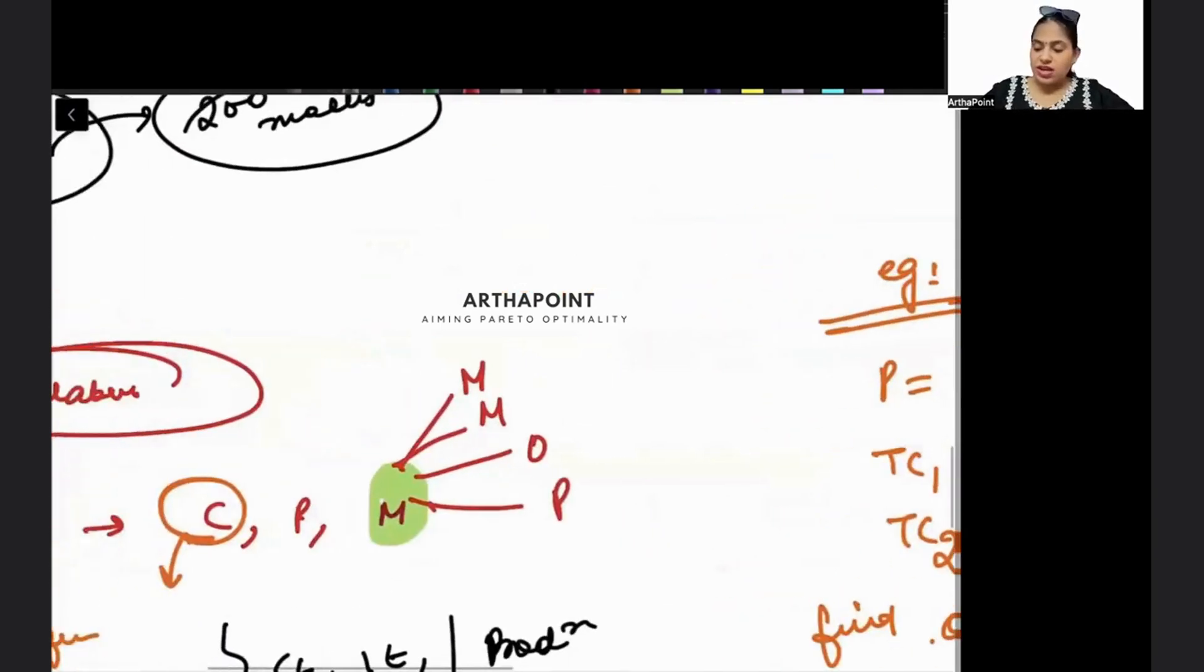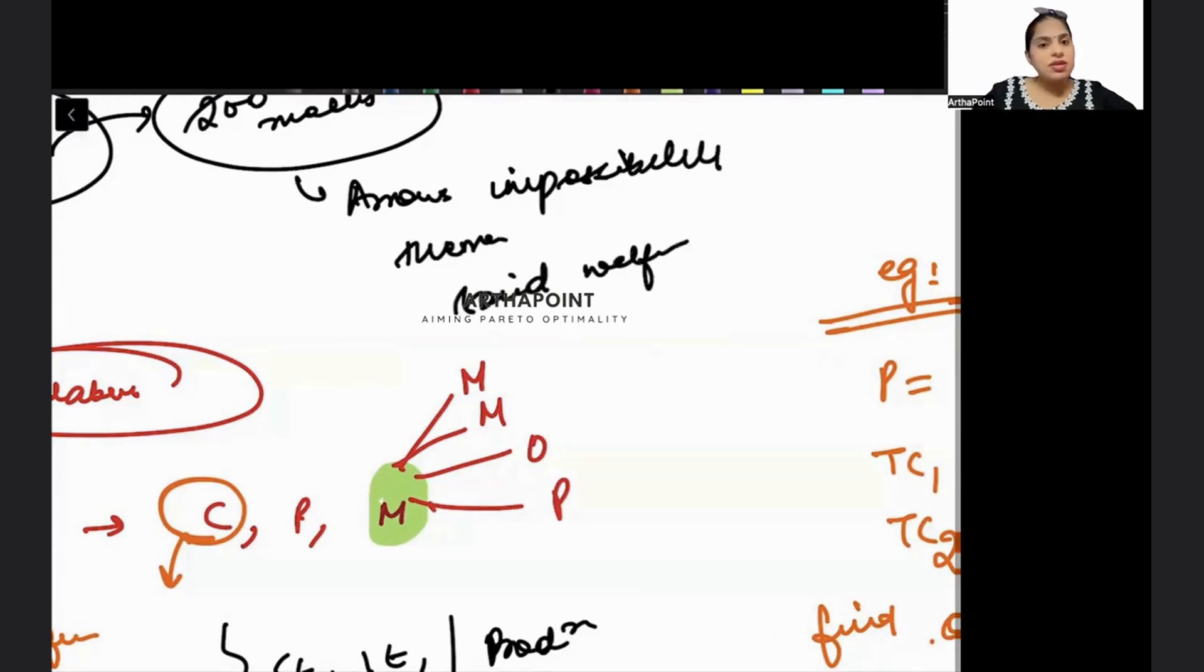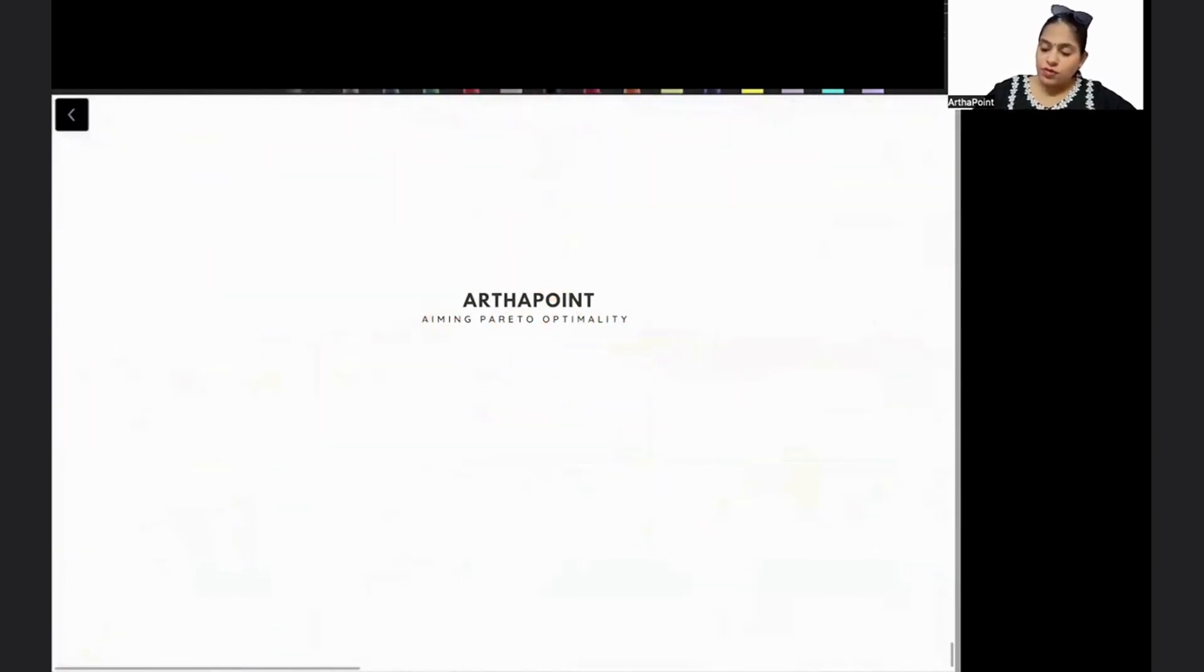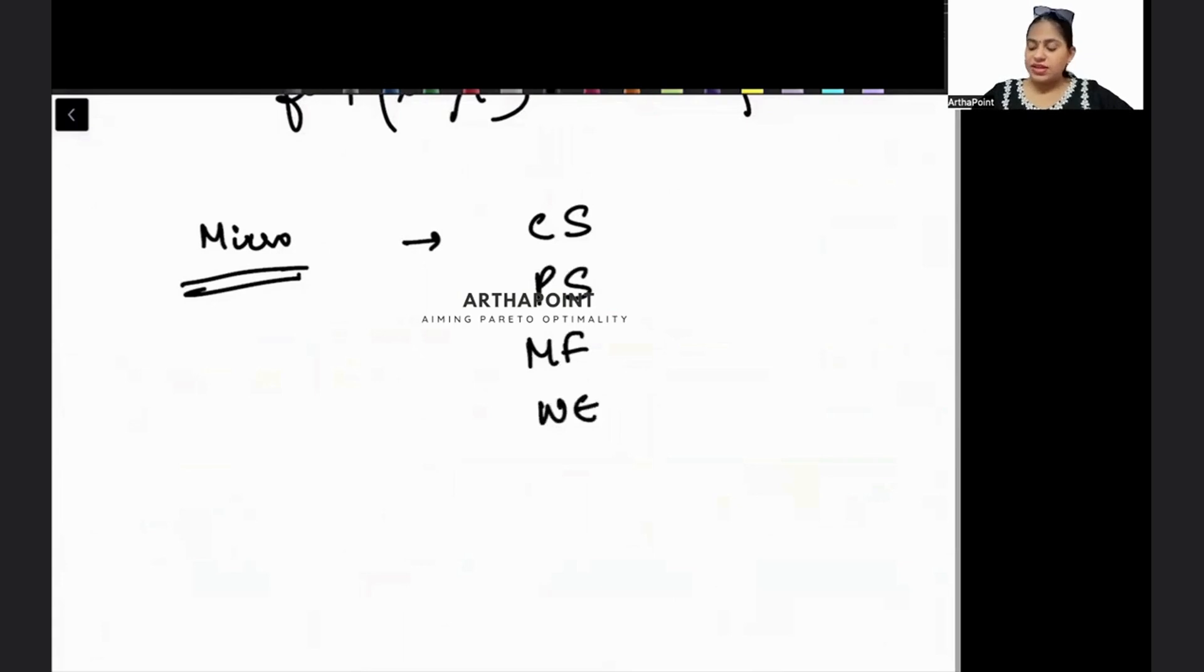They can ask you questions on Arrow's impossibility theorem on social welfare function - Benthamite, Rawlsian social welfare function, utilitarian, classical utilitarian welfare function. They can ask you questions on different welfare functions. As far as microeconomics is concerned, you will have consumer theory, producer theory, market forms, and then you will have welfare economics, and then ultimately you will have market failures - market failure, externalities, asymmetric information. This is the first part where you have to deal with microeconomics.